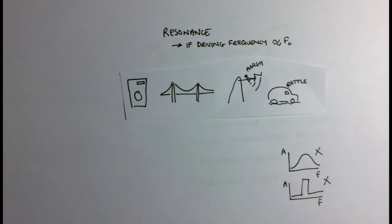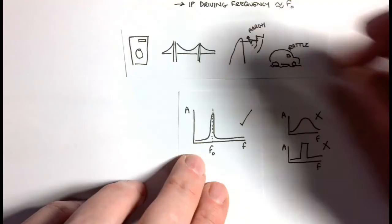The only other bit that you need to be able to talk about is what a graph of amplitude against frequency would look like, where frequency is the driving frequency. You have a system that's maybe vibrating with small amplitude oscillations, and whatever the driving frequency is, it doesn't really have much impact except for when the driving frequency is close to the natural frequency, and then you get this sudden peak.